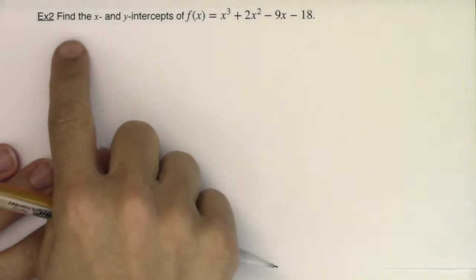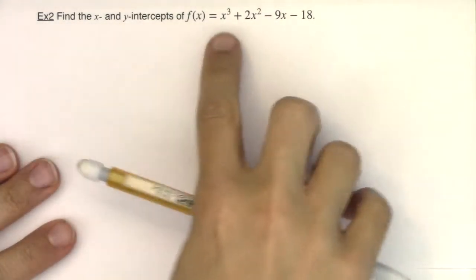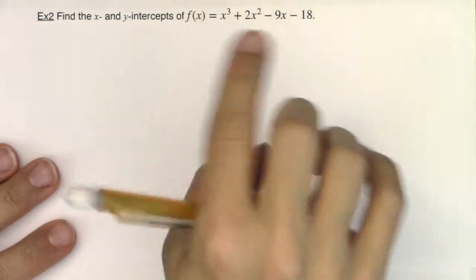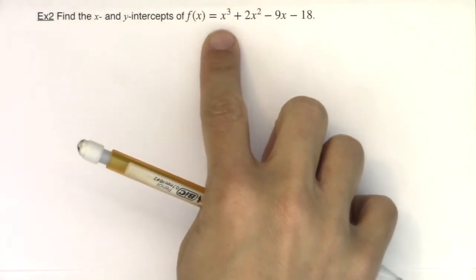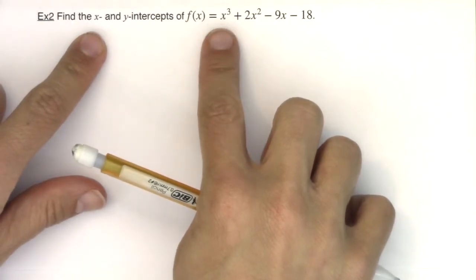Hey Math 31, here we are with example 2, same exact directions as example 1. This time I have again a polynomial, this one's degree 3, so when I go looking for the x-intercepts I should find at most three of them.